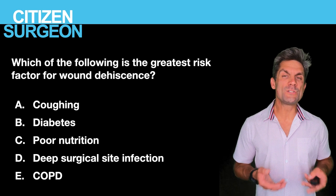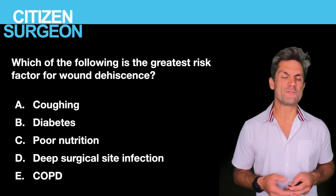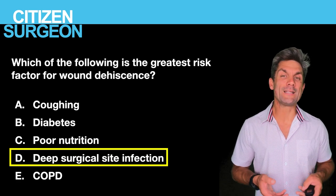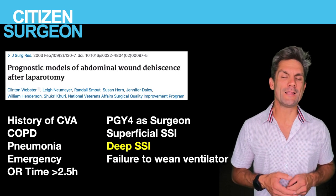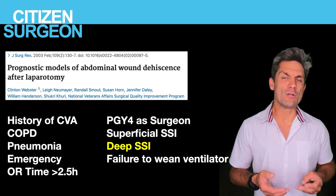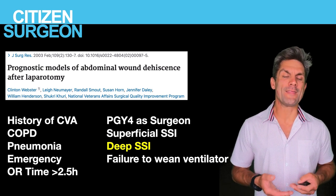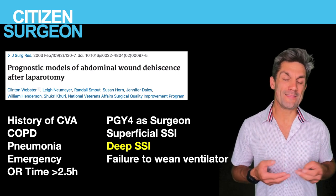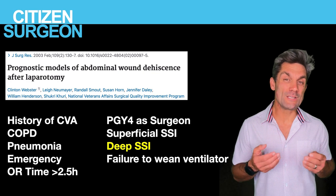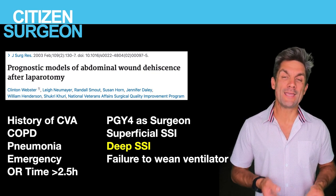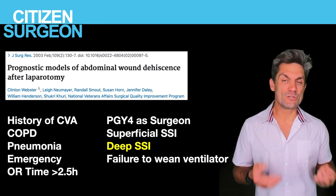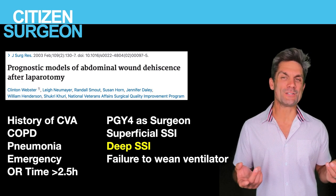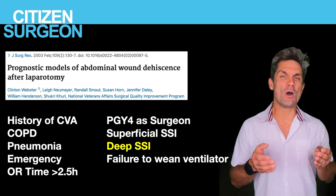Question seven: the greatest risk factor for wound dehiscence is deep surgical site infection. A study by Lee Neumeier and colleagues through the VA and NSQIP found that the odds ratio of wound dehiscence is highest with a deep surgical site infection — the odds ratio is approximately 17. That is a huge risk factor, so you want to look at your wounds daily and treat any surgical site infection promptly to prevent wound dehiscence.